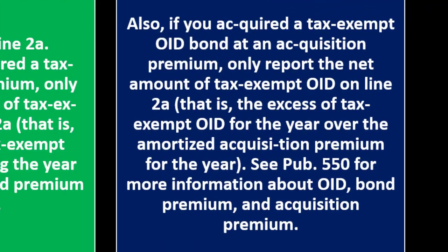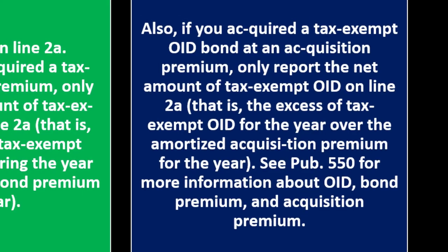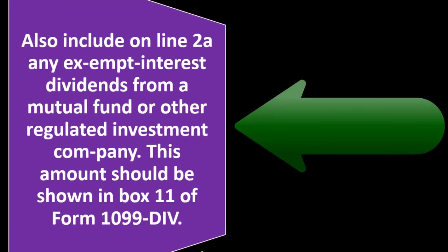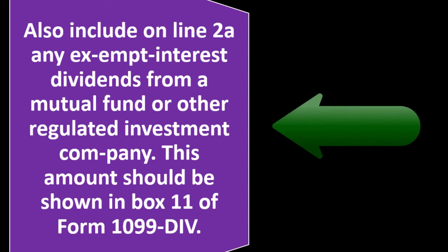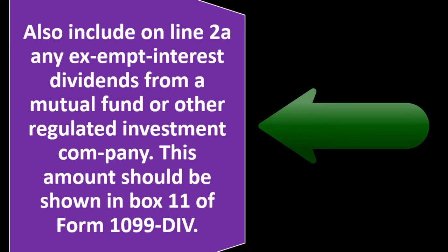If you acquired a tax-exempt OID bond at an acquisition premium, only report the net amount of tax-exempt OID — that is, the excess of tax-exempt OID for the year over the amortized acquisition premium. Your tax-exempt OID should be shown in box 11 of Form 1099. See Publication 550 for more information about OID, bond premium, and acquisition premium. Also include any exempt-interest dividends from a mutual fund or other regulated investment company, shown in box 11 of Form 1099-DIV.